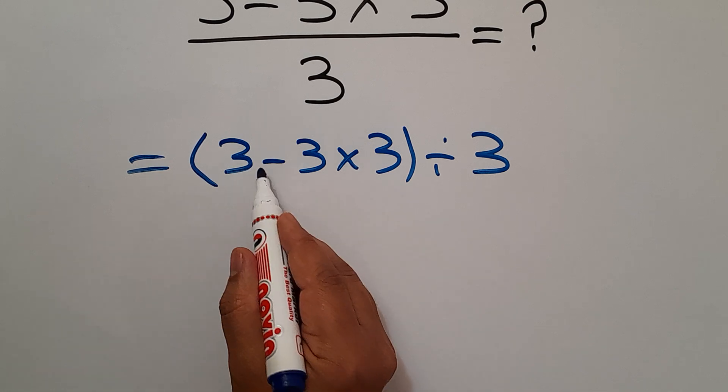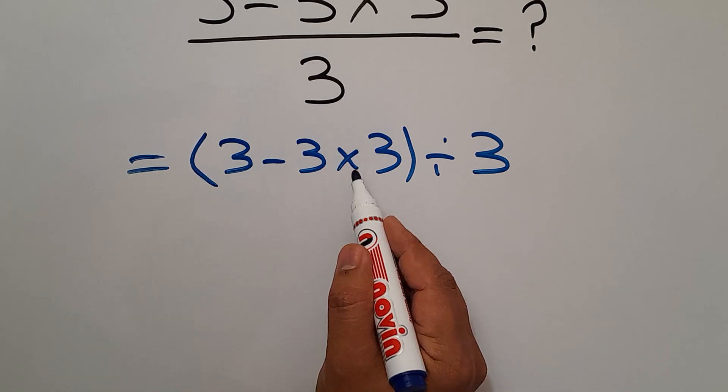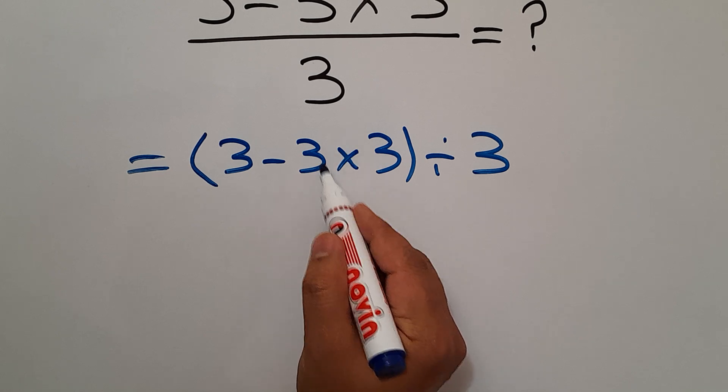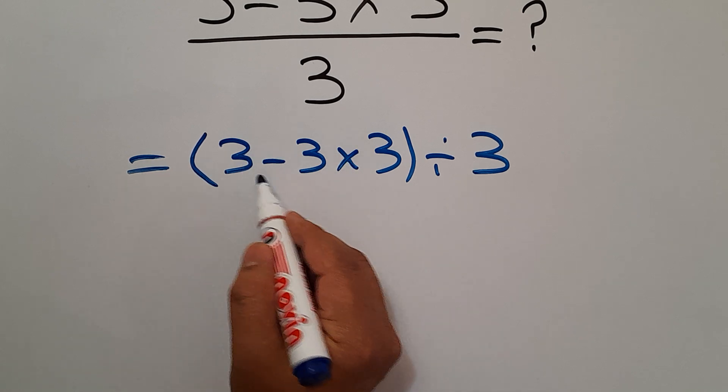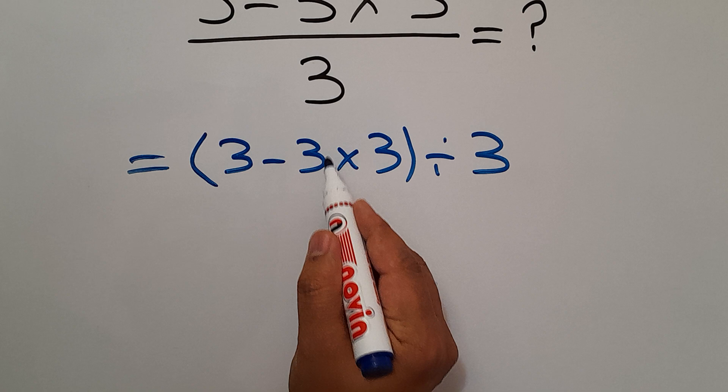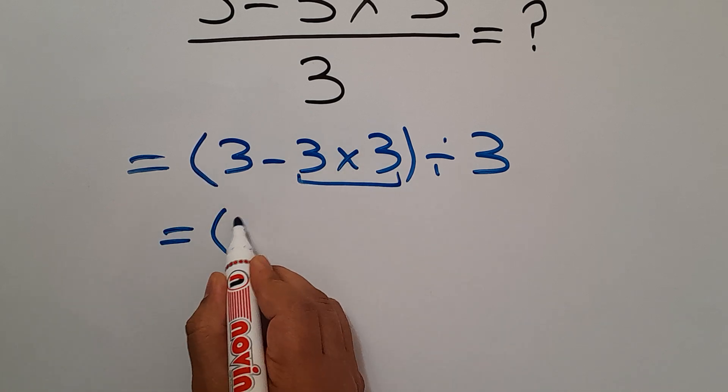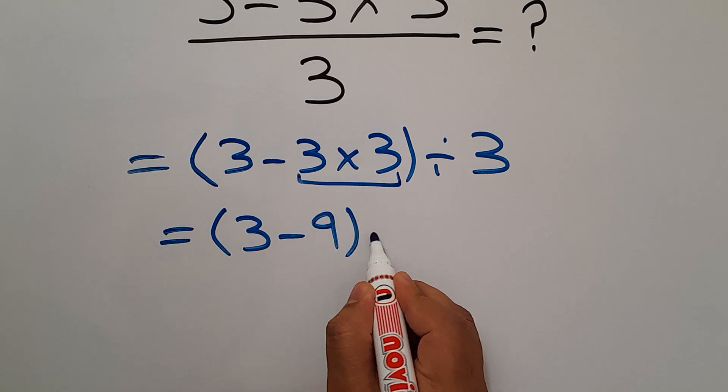So first, this multiplication: 3 times 3 gives us 9. So we have parentheses 3 minus 9, divided by 3. 3 minus 9 gives us negative 6, so we have negative 6 divided by 3.